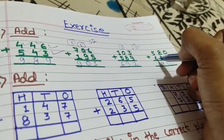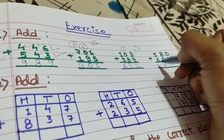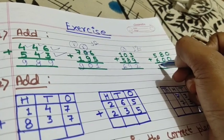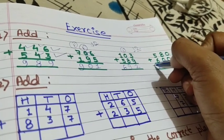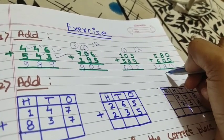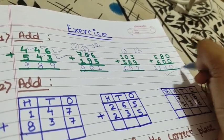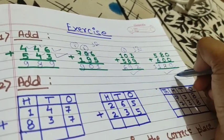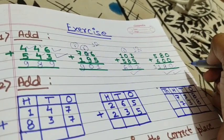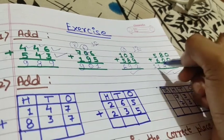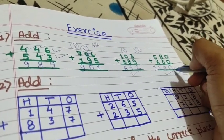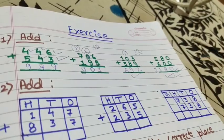5 plus 6 is 11. Here you can see a 3-digit answer, and here you can see a 4-digit answer. The answer is 1180.